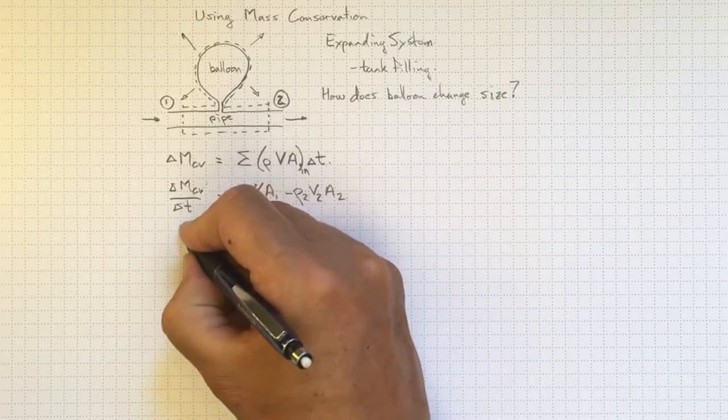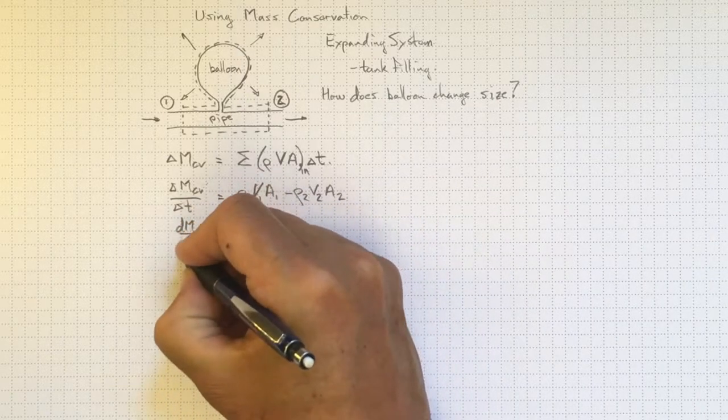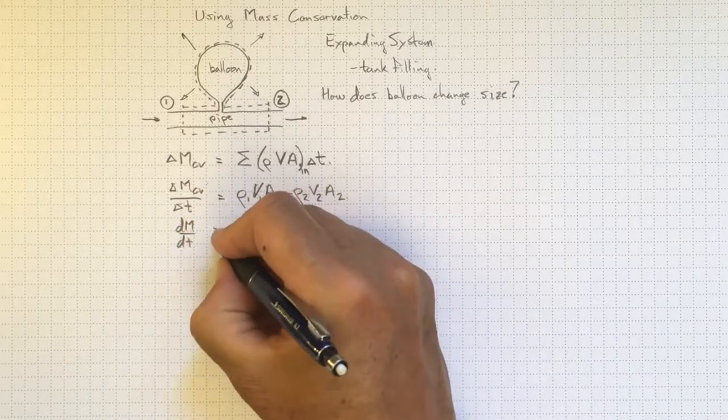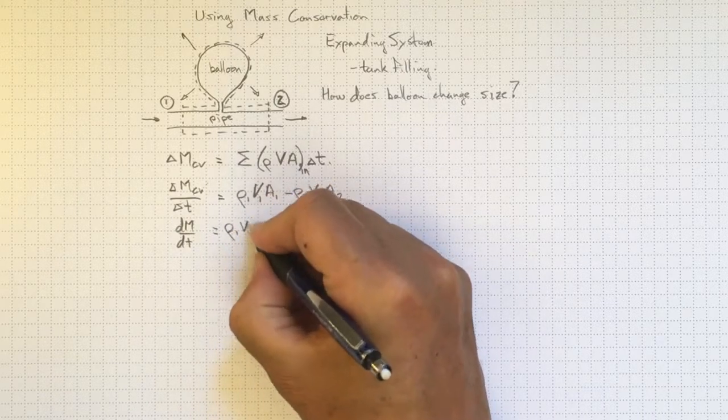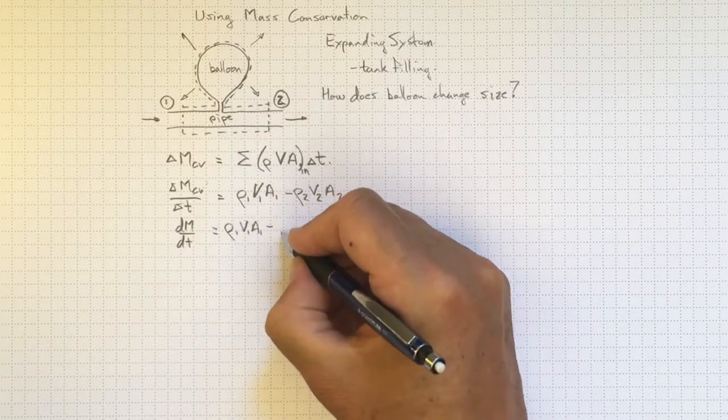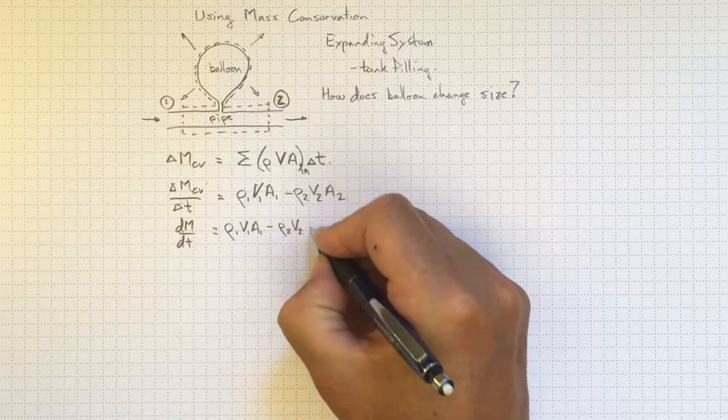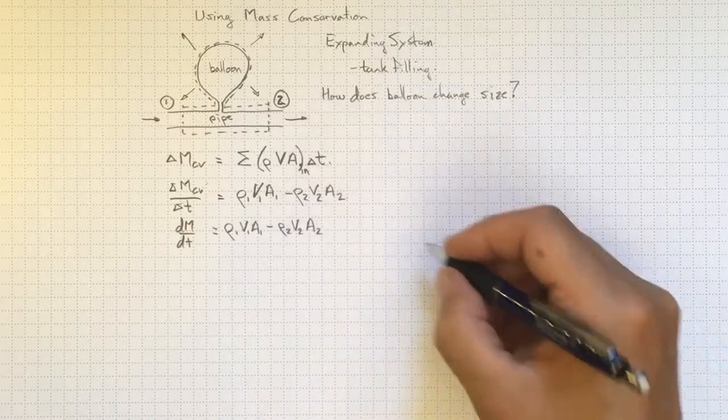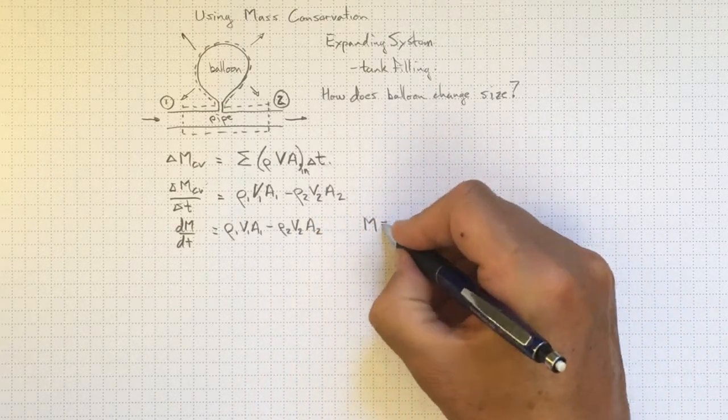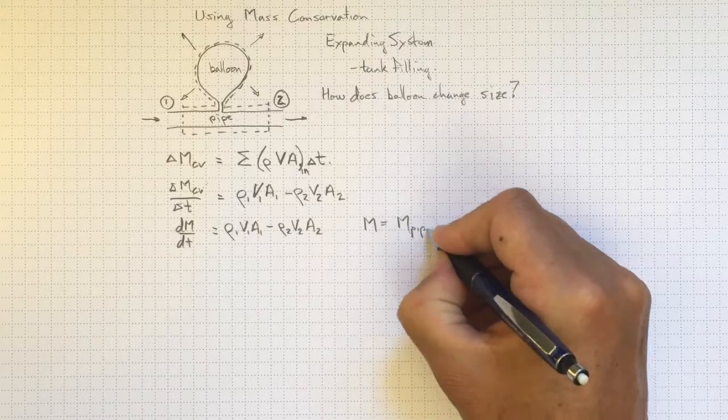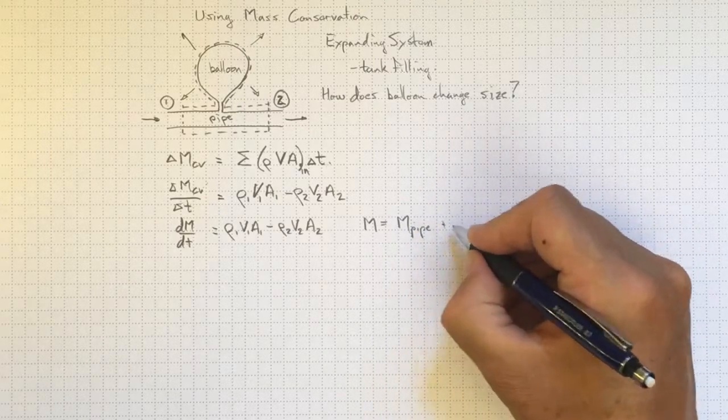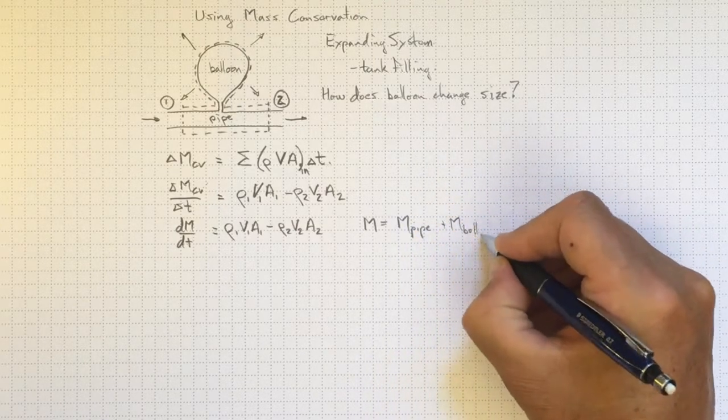Turning this to a derivative, dm/dt equal to rho_1 V_1 A_1 minus rho_2 V_2 A_2, and the mass that we're interested in is the sum of the mass of the pipe or the fluid contained in the pipe plus the mass of the fluid contained in the balloon.